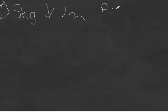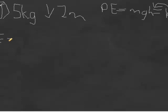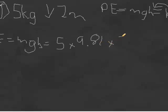And this block falls 2 meters. Now, we know that potential energy — from the last package — is equal to mass times gravity times height, which we also learned in the last class is equal to kinetic energy. Therefore, kinetic energy also equals mass times gravity times height, which is equal to 5 times 9.81 times 2, which is equal to 98.1 joules.